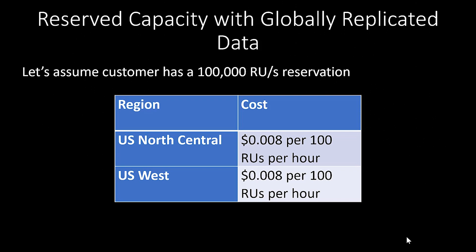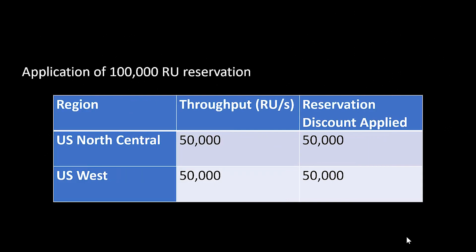Let's assume this customer has an account that's globally replicated their data into both U.S. North Central and U.S. West. The price for RUs in each of these regions is $0.08 per 100 RUs per hour. If each region used 50,000 RUs of throughput, this reservation would be completely applied to this account, and that customer would not have any on-demand request unit costs in their bill. If the customer had to use additional throughput, they'd be able to purchase these request units for the on-demand price of $0.08 per 100 request units per hour.